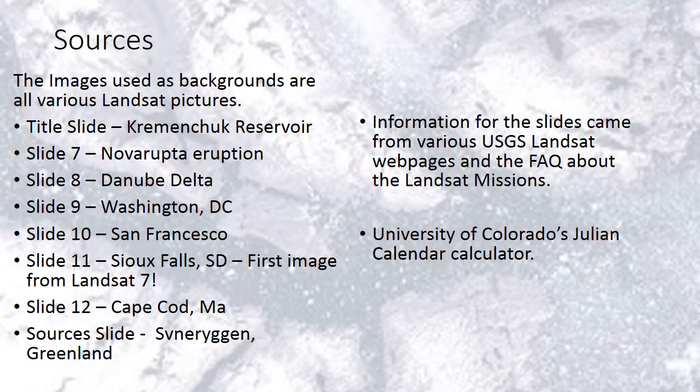The background slides throughout this presentation came right from the Landsat web page hosted by the USGS. Slide 11, the one right before the Cape Cod slide, was the first image from Landsat 7 and happened to be of Sioux Falls, South Dakota — right where the EROS Data Center is. You can also see some of the Landsat web pages and frequently asked questions about Landsat missions listed here. The University of Colorado's Julian calendar calculator was the source for the Julian date image.